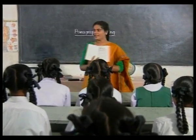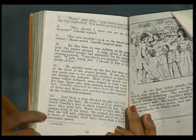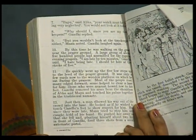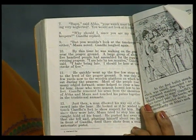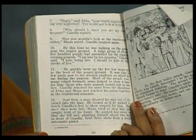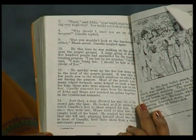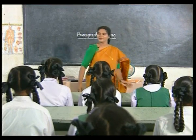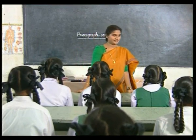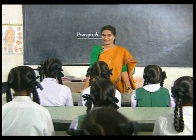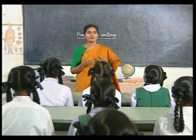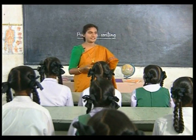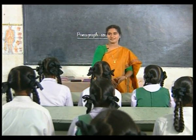Students, now look at this — this is a page from your reader. What do you see here? Are all the sentences running continuously? You see that if they are divided into certain sections or divisions, these sections or divisions are called paragraphs. A paragraph contains related sentences put together to form a unit.